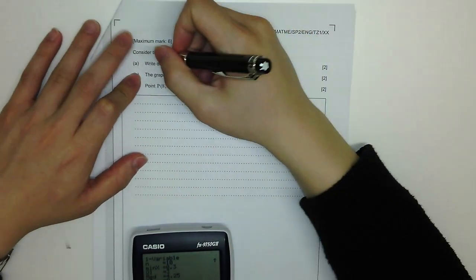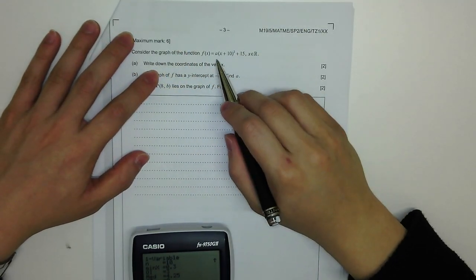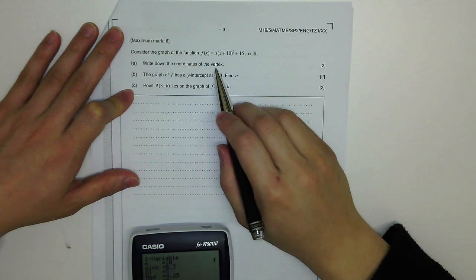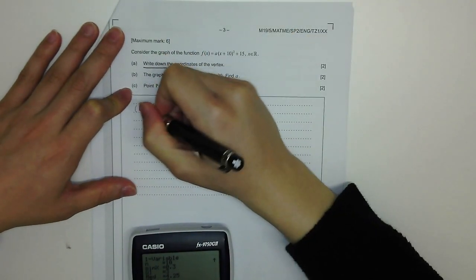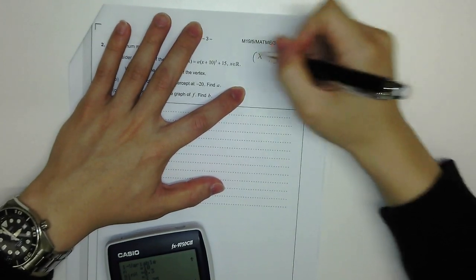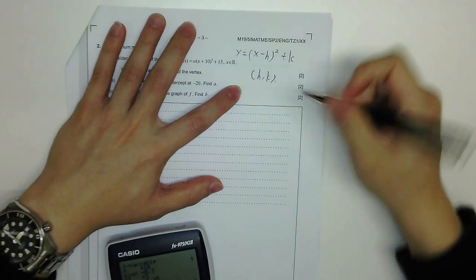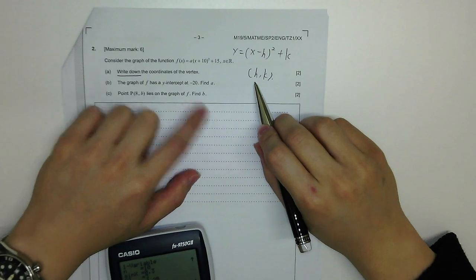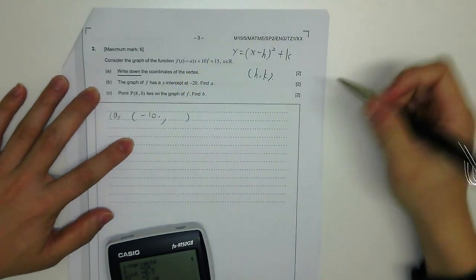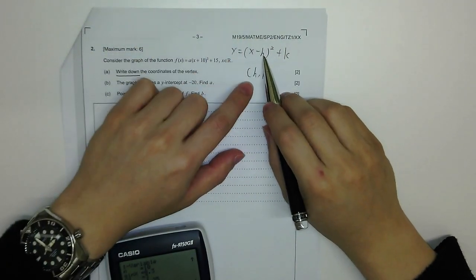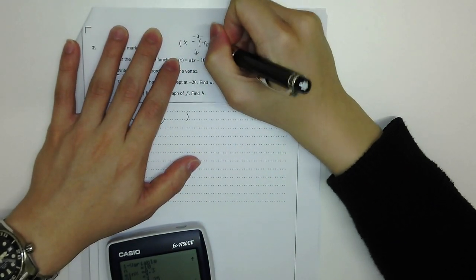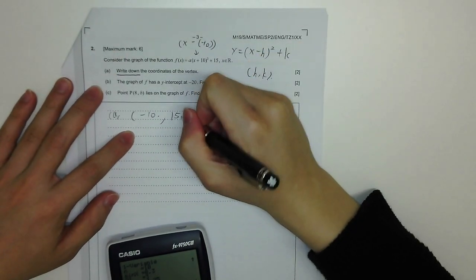Question 2. Consider the graph of function f(x) = a(x + 10)² + 15. All x are real numbers. Part A: write down the coordinates of the vertex. You don't need to calculate because that's what we call vertex form — x minus h squared plus k is the vertex form, where h and k are the x and y coordinates of the vertex. So the x-coordinate is negative 10, because x minus h means h equals negative 10. And then positive 15 is the y-coordinate.